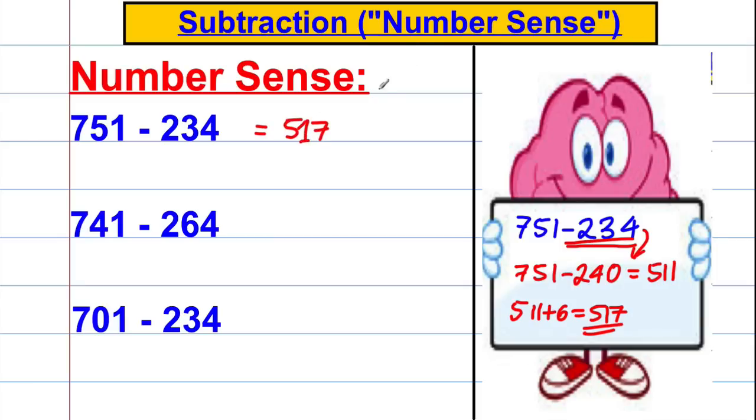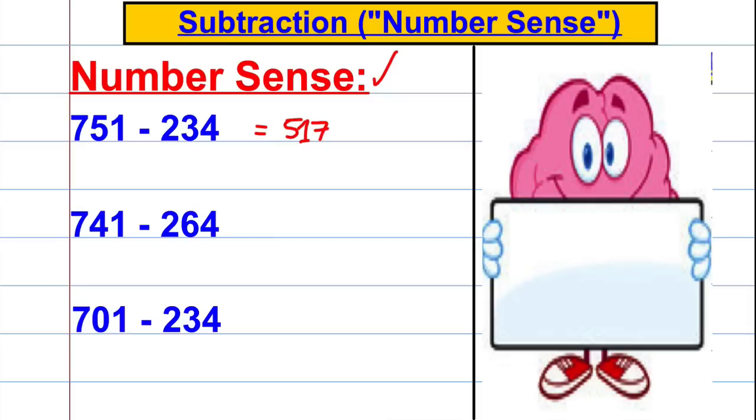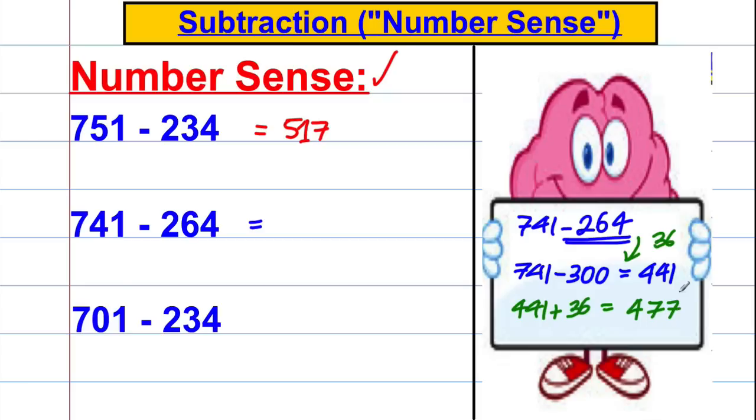There are other methods. There are loads of other methods. That's the beauty of being creative and using your imagination. But it's just to make kids think you don't always have to do these in columns. Another one. 741 subtract 264. What I might have done, it's always the second one that causes me the problem. So I might have just done 741 subtract 300. Yeah, because that's nice and easy. It's 441. Now, I have ended up taking off 36 more than I needed to. So what I would do with the 441 is I would add back the 36 in my head, which is quite easy. It's simply 477. So again, 477, that was one way of doing it in my head without column method.